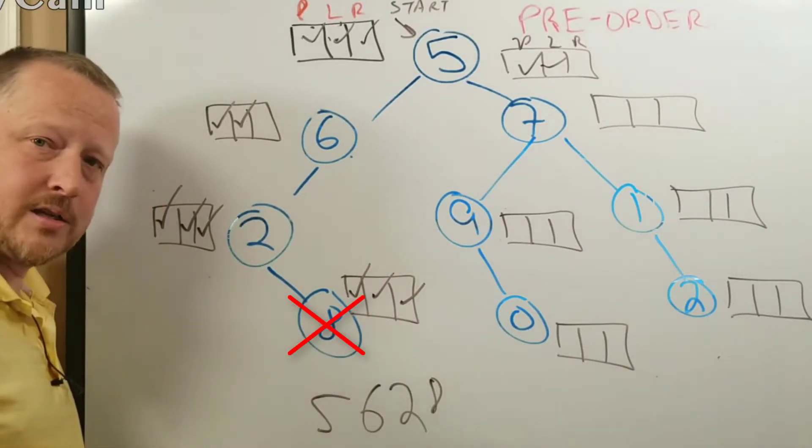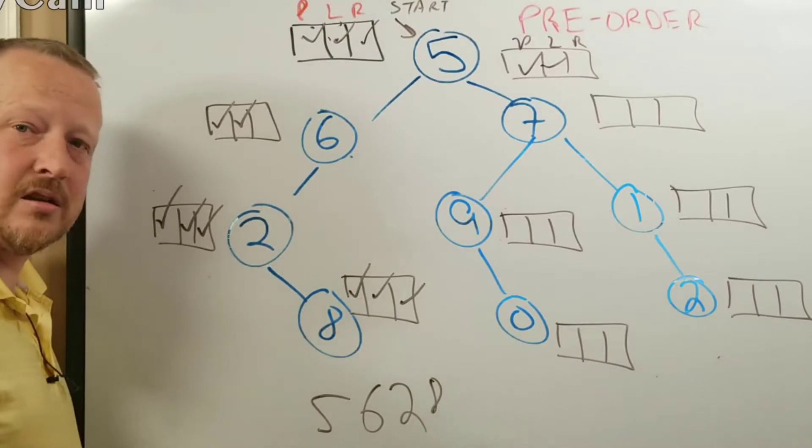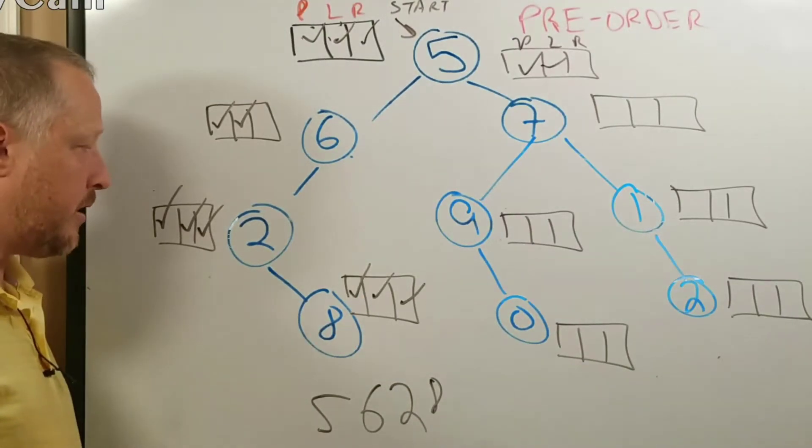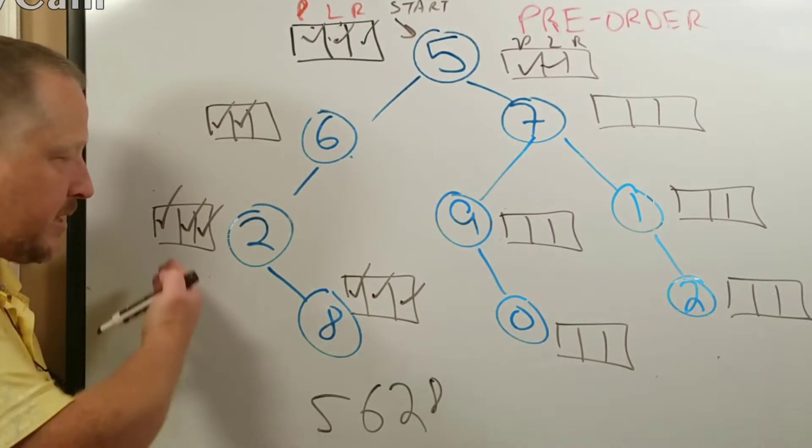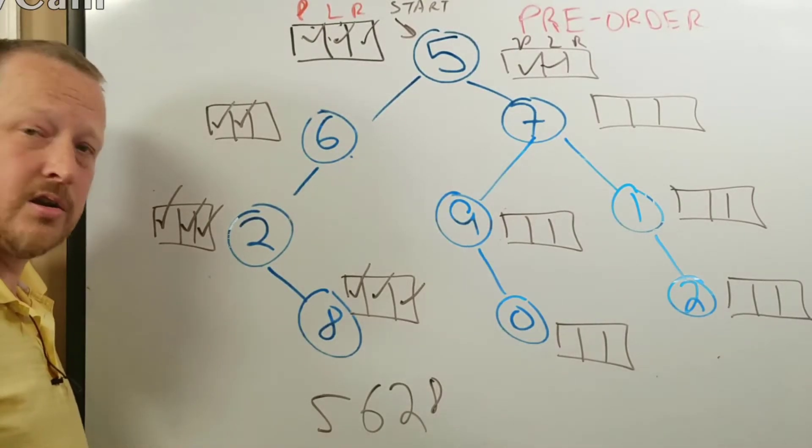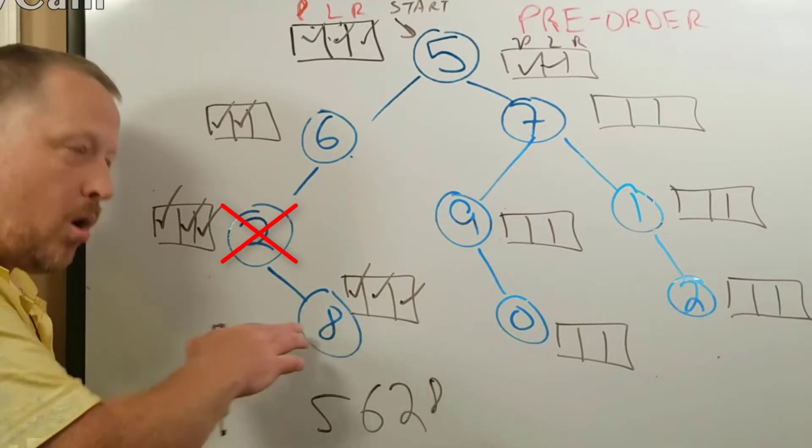So once I'm done with eight, you're going to see a magic X appear there. I move back up to the next available number. And you're looking at it and saying, well, wait a minute. Two, it's got all this stuff you've done. You're right. So once I'm done with that, it's two called eight to say, hey,